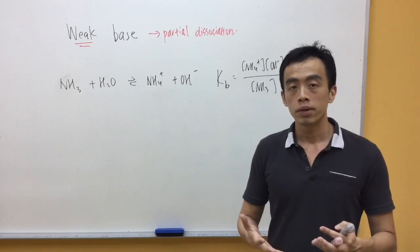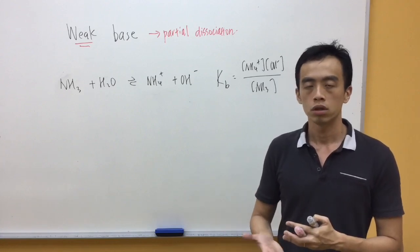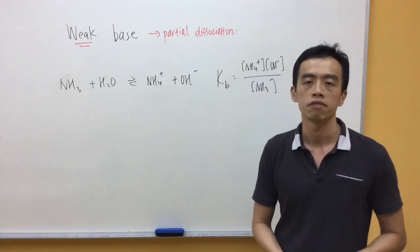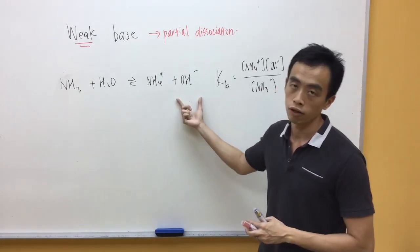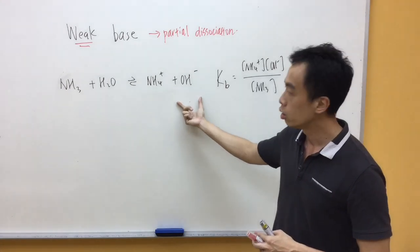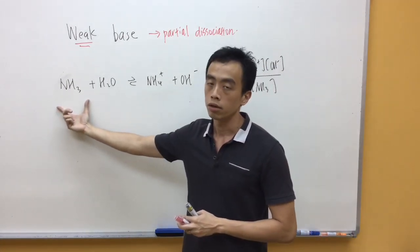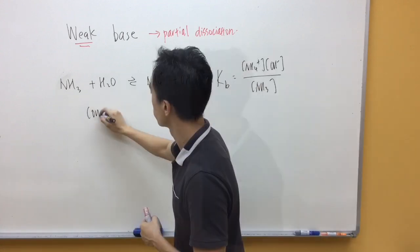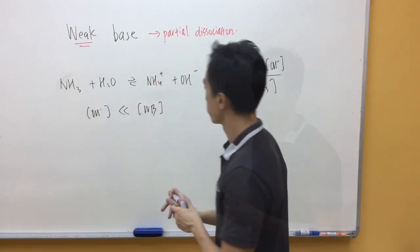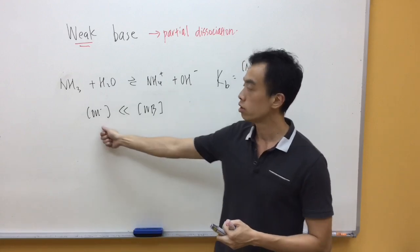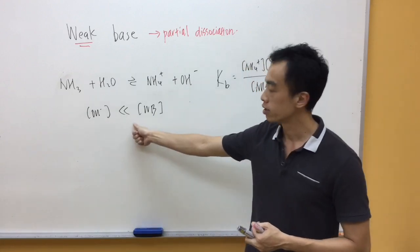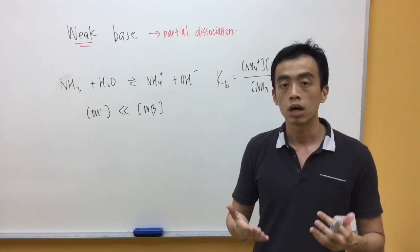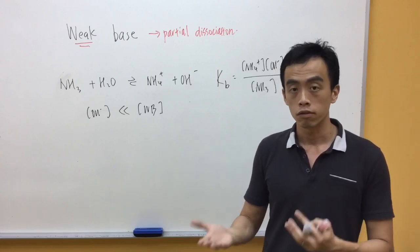Again, usually for weak bases, the value for Kb is pretty small, around the region of 10 to the power minus 3, 10 to the power minus 4, 10 to the power minus 5. So, what this means is the concentration of my OH- in solution will be much smaller than the concentration of ammonia. So, we can write out this expression. We know that in solution, the concentration of my OH- is much less than the concentration of my weak base.